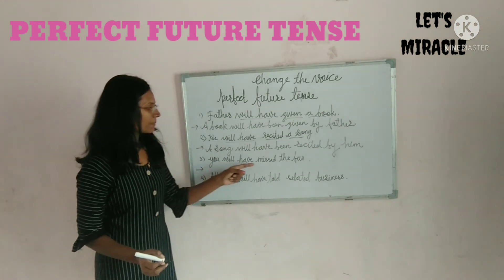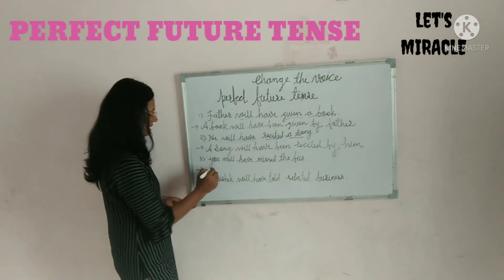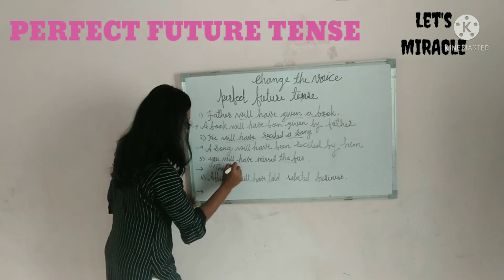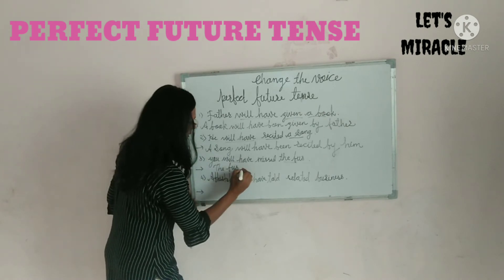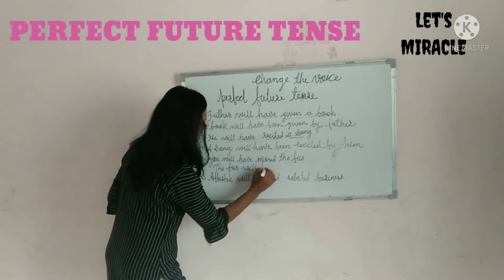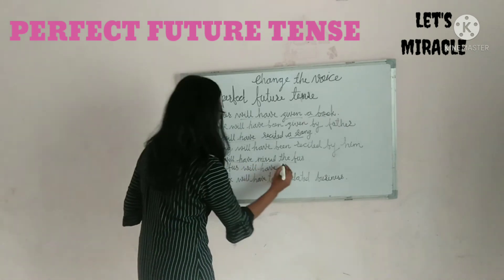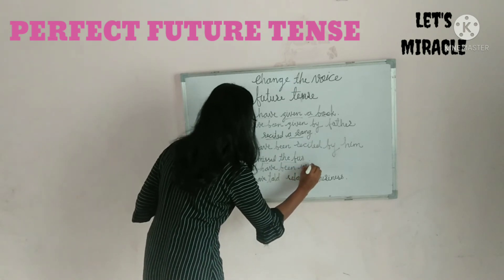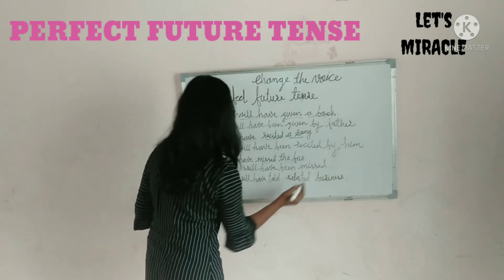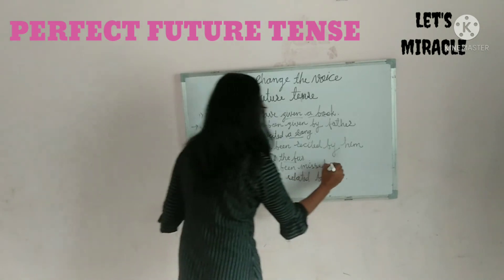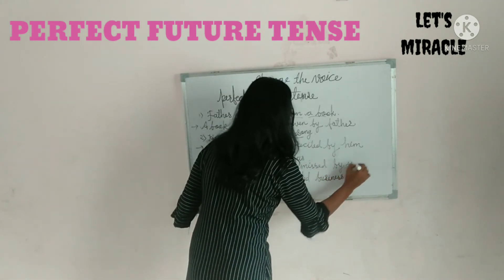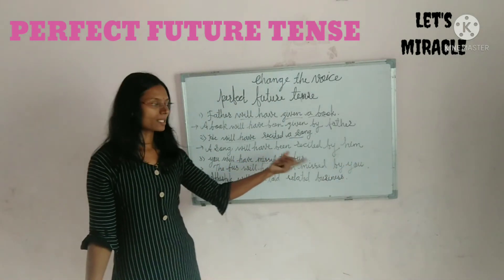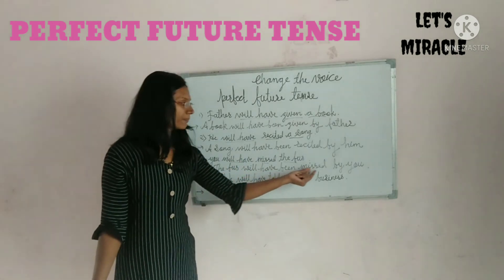You will have missed the bus. It will change into passive voice as: the bus will have been missed by you. 'Been' is added, and the subjective case 'you' remains as it is. So you will have missed the bus becomes the bus will have been missed by you.